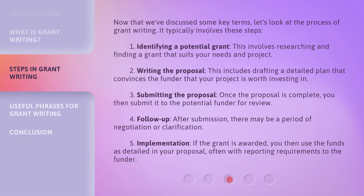Now that we've discussed some key terms, let's look at the process of grant writing. It typically involves these steps. 1. Identifying a potential grant. This involves researching and finding a grant that suits your needs and project. 2. Writing the proposal. This includes drafting a detailed plan that convinces the funder that your project is worth investing in.